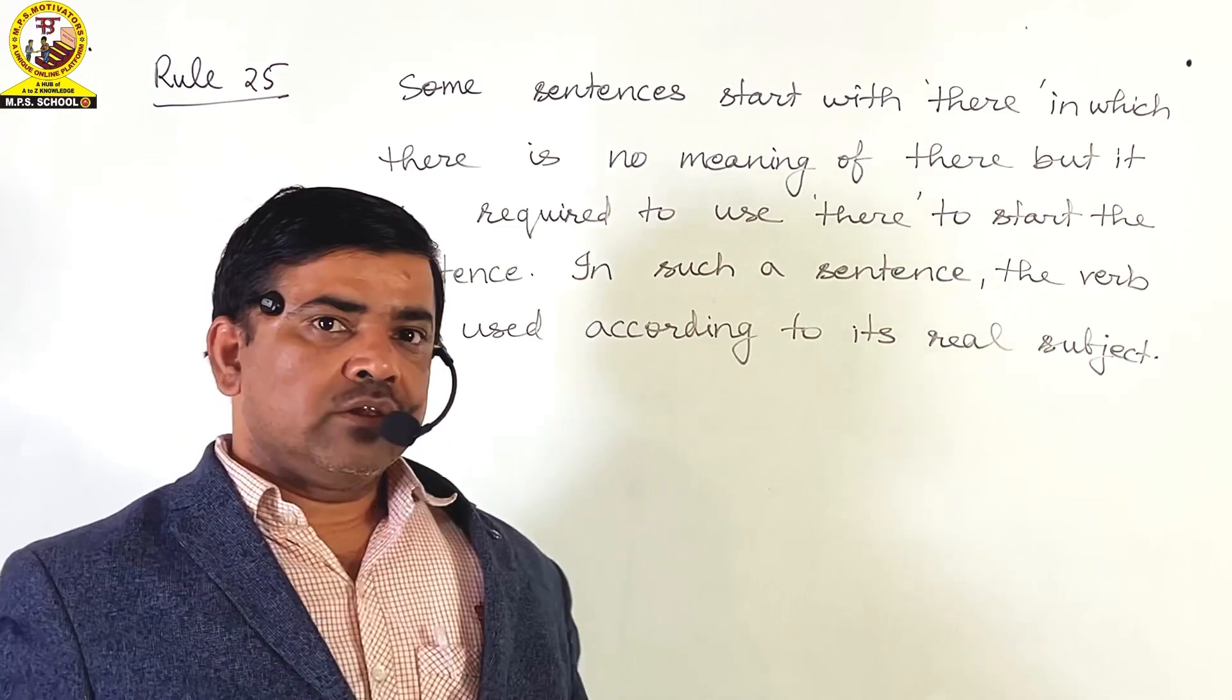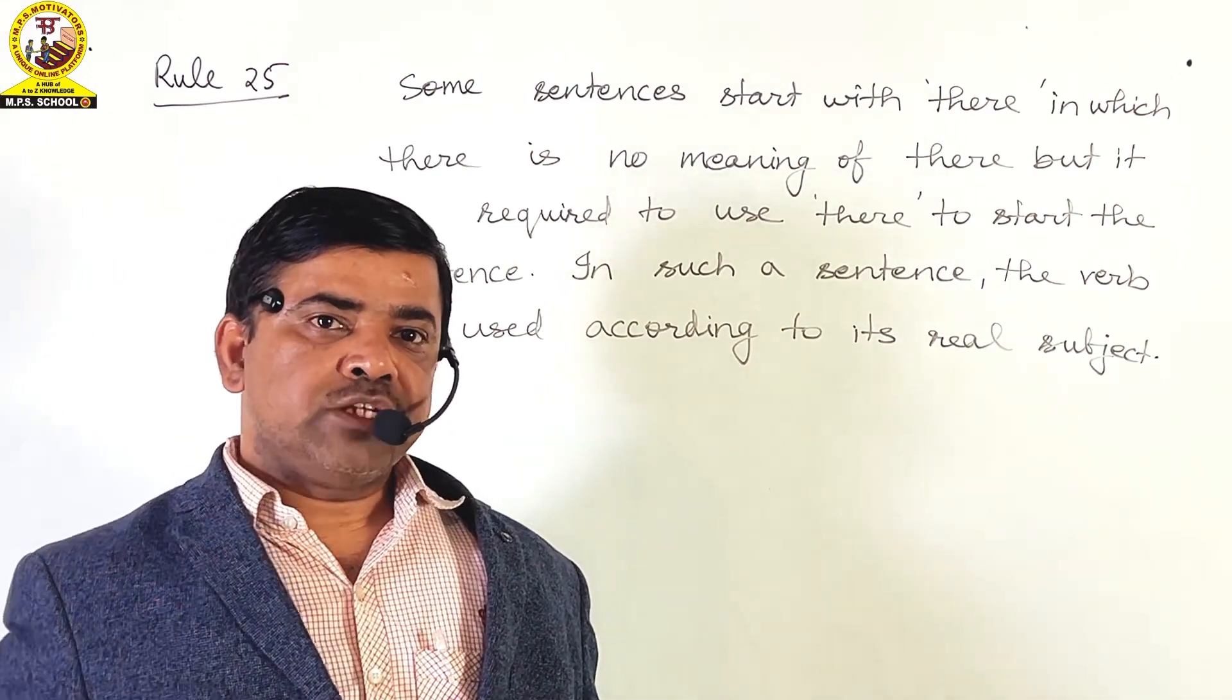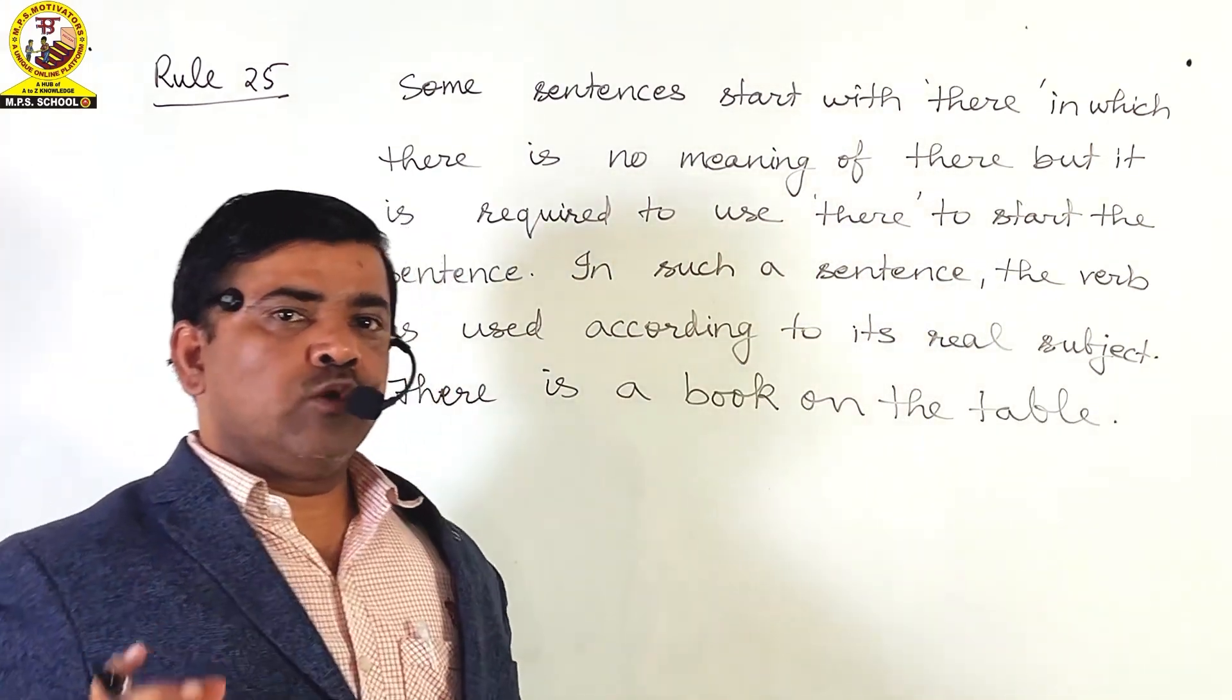In such sentences, 'there' is known as the dummy subject. For example, there is a book on the table.